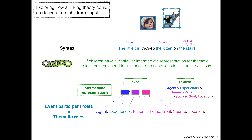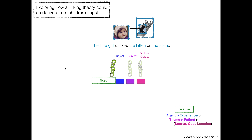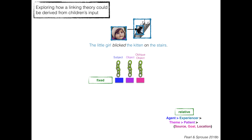If children have a particular intermediate representation for thematic roles, then they need to link those representations to syntactic positions — that is what we're talking about in terms of learning or deriving those links. In the case of the fixed representation, you have three categories: proto-agent, proto-patient, and elsewhere, and the links to the subject, the object, and the oblique object. The theory as a whole is this three-link unit — this is what your linking theory looks like.